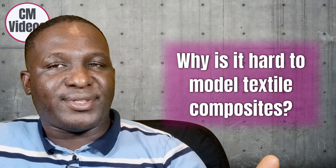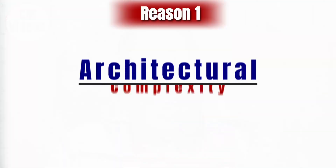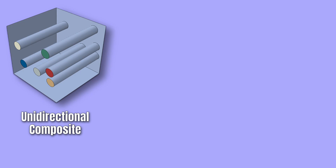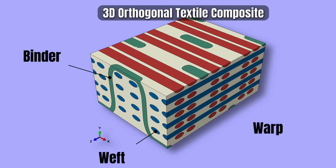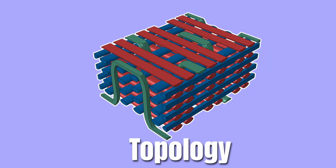The first reason why it is very hard to model textile or woven composites is what I call architectural complexity, especially when compared with unidirectional, bidirectional, or multi-directional composites. Laminated composites have just those laminates, but with textile or woven composites you have to deal with the binder, the weft, and the warp elements in different orientations in space. That topology is really complicated, especially for those coming from a laminated composites background.